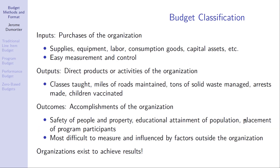If you are thinking about budget classification, a budget can be classified around three large categories. You could focus on inputs — basically the purchases of the organization. Think about a budget where you are focusing on supplies, equipment, labor, and capital assets, in the sense that you have a list of how much your agency needs. That is called a line-item budget, which we will discuss later.